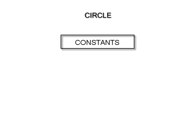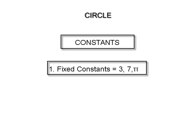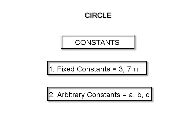There are two types of constants. Constants like 3, 7, pi, whose values do not change, are called fixed constants, whereas constants like a, b, c, etc. are called arbitrary constants.